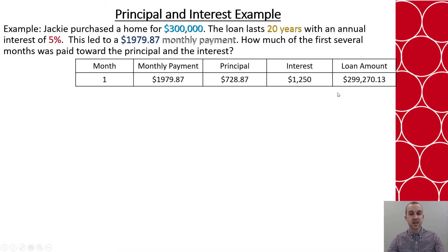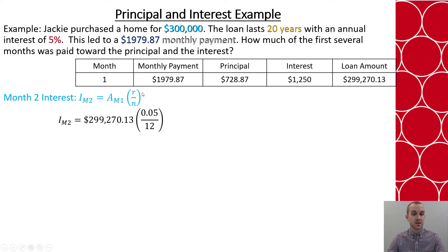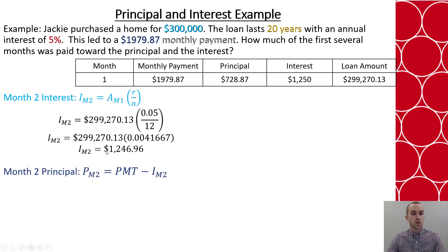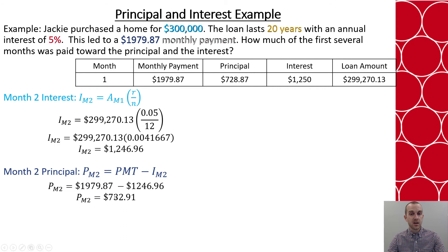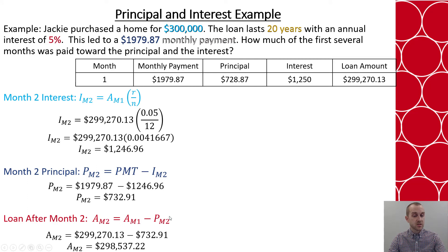I put that information in a table and move to month two. The interest in month two uses the new loan amount times the monthly interest rate. Because the loan is a little bit smaller, the interest that month is just a little smaller too, which means the principal I'm paying towards is a little bit bigger — it grew by about $4. That means my overall loan, when I subtract this new principal payment, will shrink as well. I could continue this process for month three, month four, and on for all 240 months.